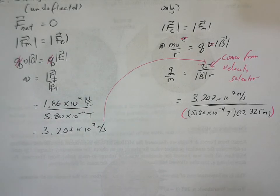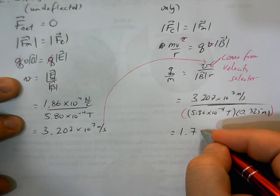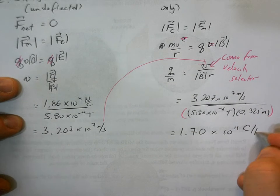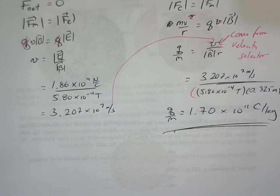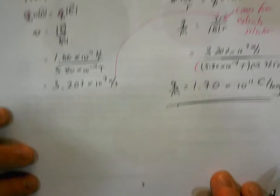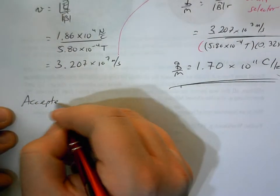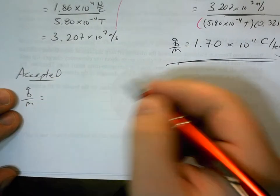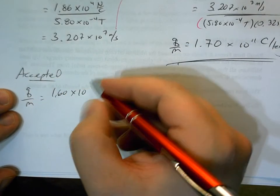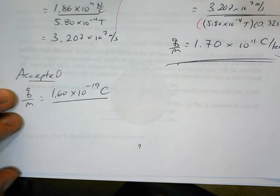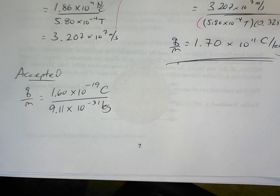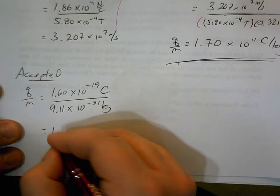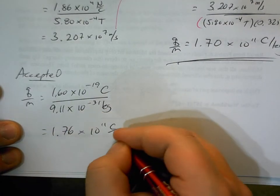Calculating q/m gives approximately 1.70 × 10¹¹ C/kg — the experimental charge-to-mass ratio for an electron. The accepted value uses the known electron charge of 1.60 × 10⁻¹⁹ C and mass of 9.11 × 10⁻³¹ kg, giving about 1.76 × 10¹¹ C/kg.